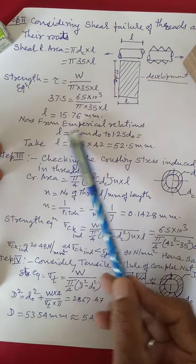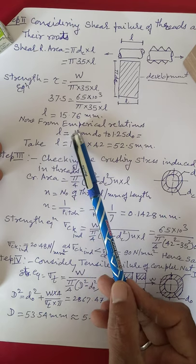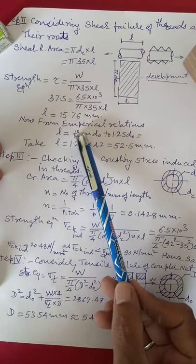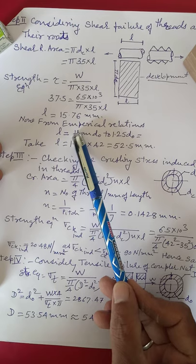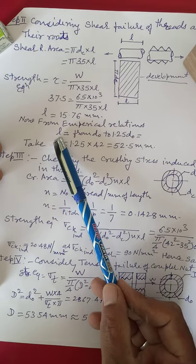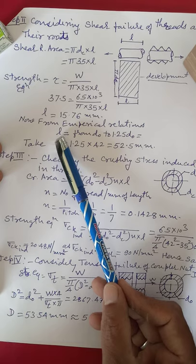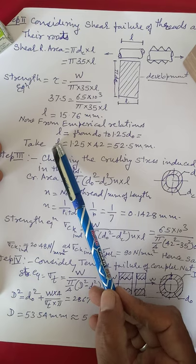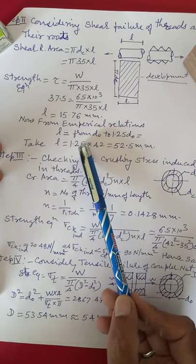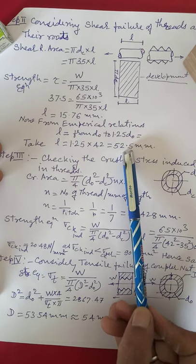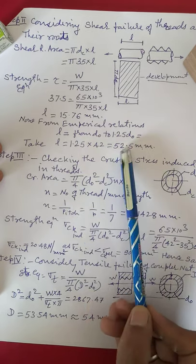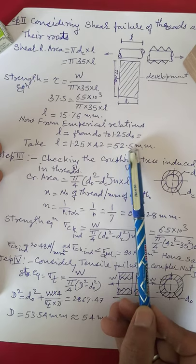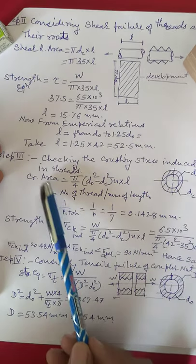From the empirical relation, L must be taken as do to 1.25 · do. We calculate the length of the nut empirically: 1.25 × 42 = 52.5 mm. We take whichever value is greater, so L = 52.5 mm.